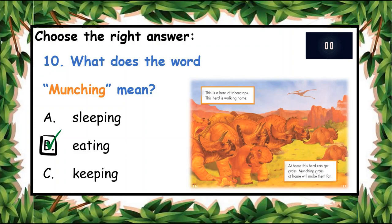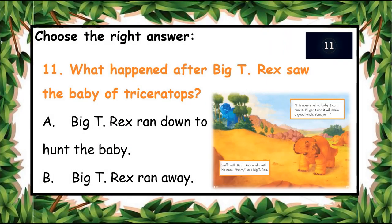Bravo! The next question: what happened after Big T-Rex saw the baby of a Triceratops? A: Big T-Rex ran down to hunt the baby. B: Big T-Rex ran away. What do you think? You have ten seconds to answer. A: Big T-Rex ran down to hunt the baby — he wants to get his lunch. That's the right answer!